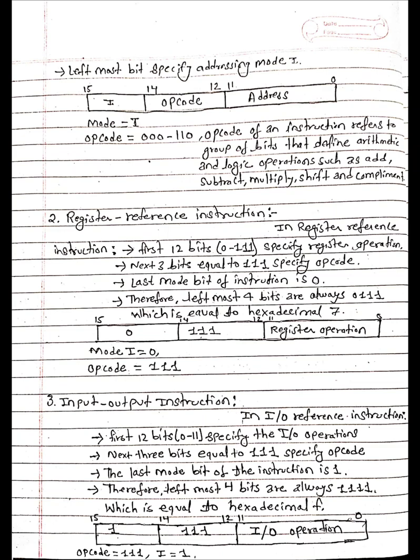Leftmost bit specifies addressing mode i. Here i is mode and opcode equals 000 to 110, which means hexadecimal 0 to 6. A code of an instruction refers to a group of bits that define arithmetic and logic operation functions such as add, subtract, multiply, shift, and complement.